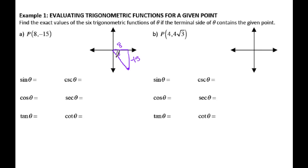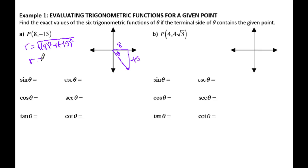This angle is called your reference angle, which we'll talk more about in a little bit. To figure out r, you're just working with the Pythagorean theorem: x squared plus y squared equals r squared. Make sure you put that negative 15 in parentheses if you're using a calculator. So you end up with r equals 17 once you work through it. Now that you have all three sides, you can set up your trig ratios.